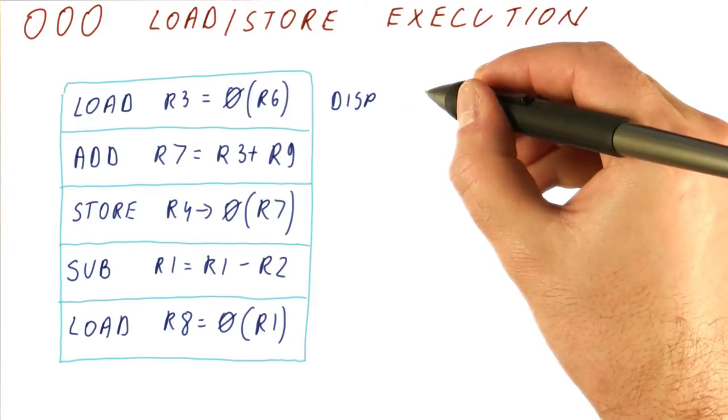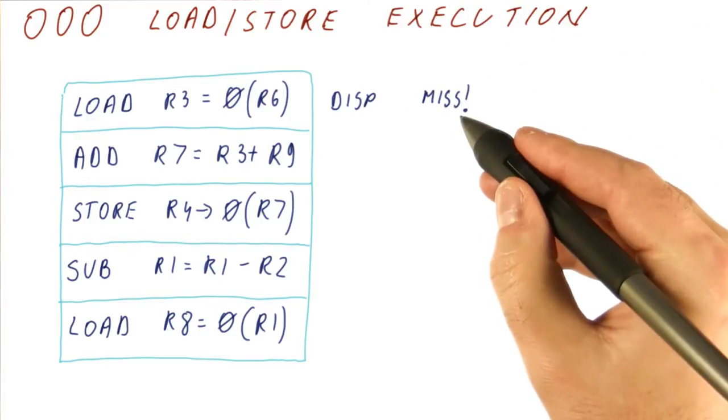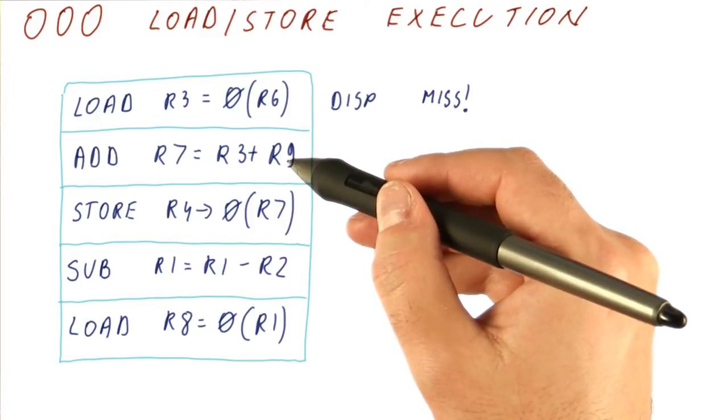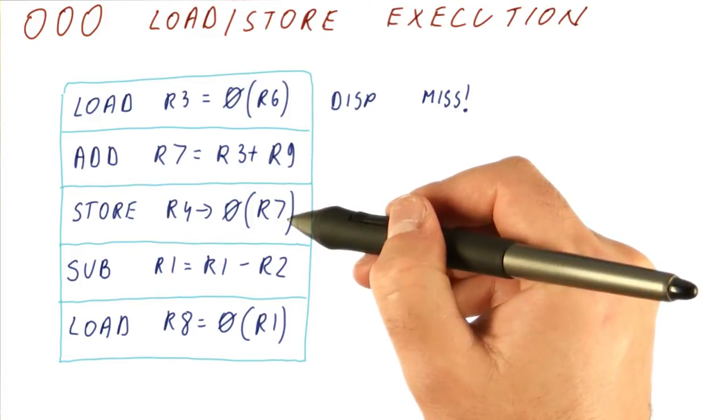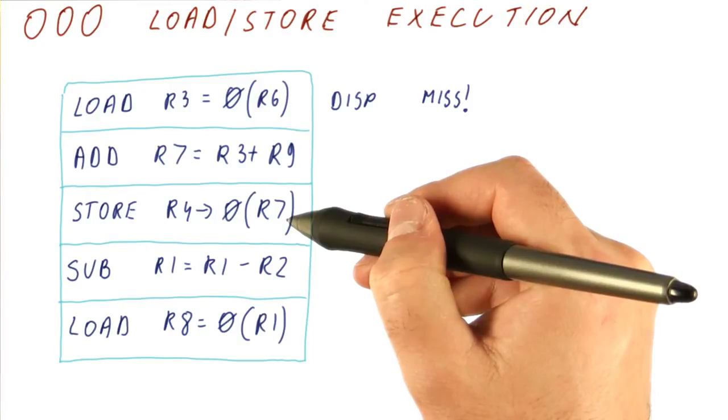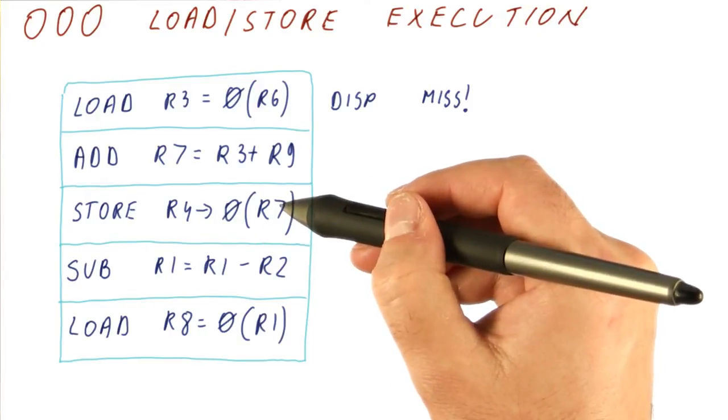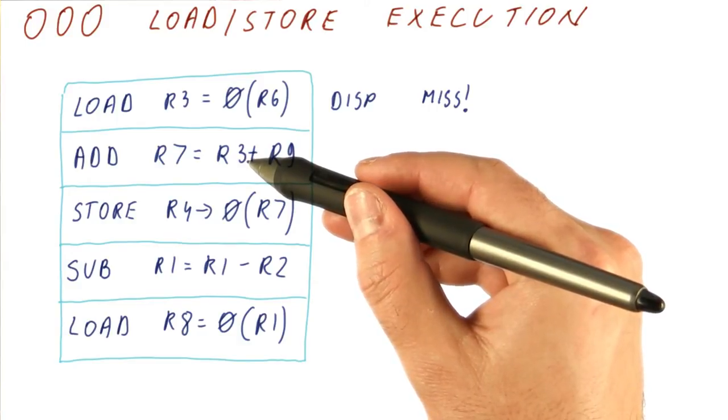But let's say that it's a cache miss, so it's going to take a while until this load comes back. This instruction cannot be dispatched until that happens, and this instruction cannot be dispatched until that happens. In fact, the store doesn't even know the address to which it's going to be storing until the add completes, which is going to happen at some future point.